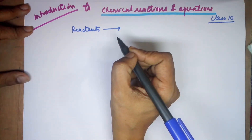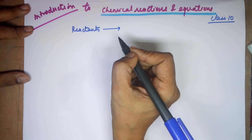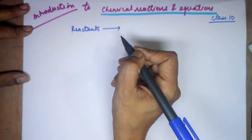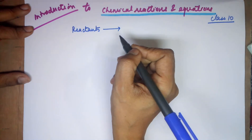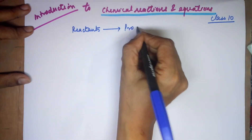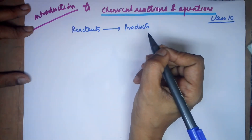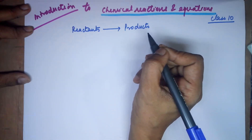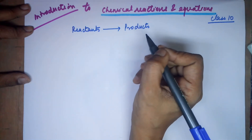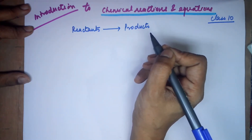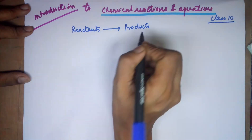As the reaction begins, new products are formed — new substances are formed — and what is now formed is called as the products, which are always to be written on the right-hand side. So your reactants will always be on the left-hand side, what you are starting off the reaction with, and what is new and formed in the process of the reaction is called as the products.